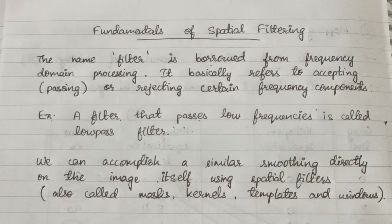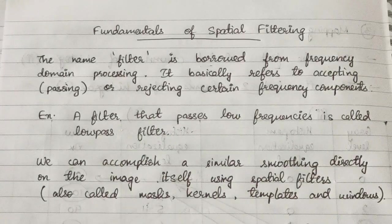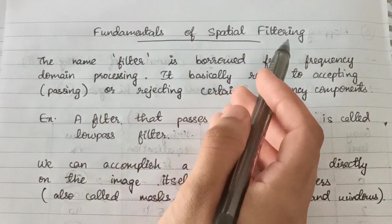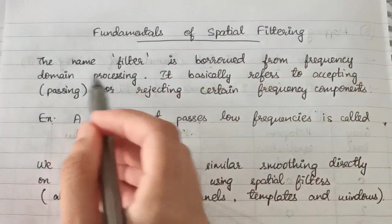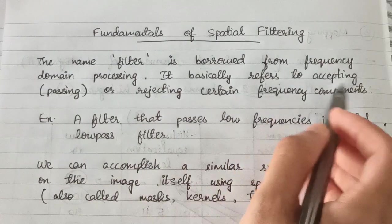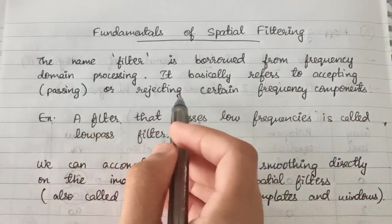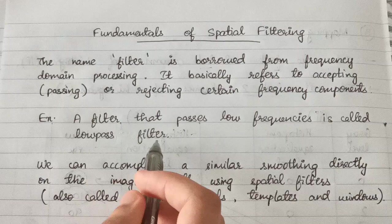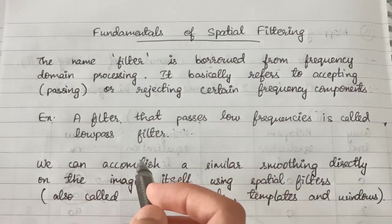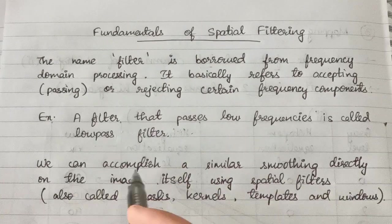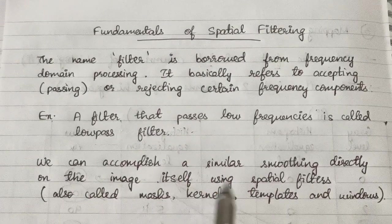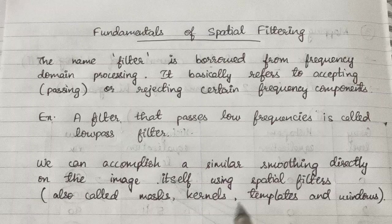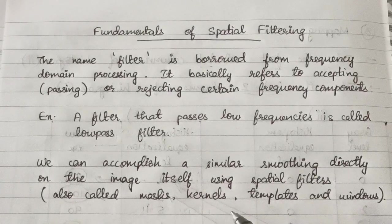Welcome to the 12th lecture of the DIP series. Today we're going to talk about fundamentals of spatial filtering. Filtering borrows from frequency domain processing and refers to accepting, passing, or rejecting certain frequency components. If it passes low frequencies it is called a low pass filter; if it passes high frequencies it is called a high pass filter. We can accomplish similar smoothing directly on the image using spatial filters, also known as masks, kernels, templates, and windows.